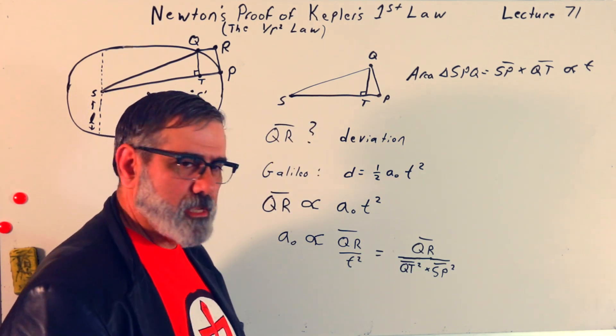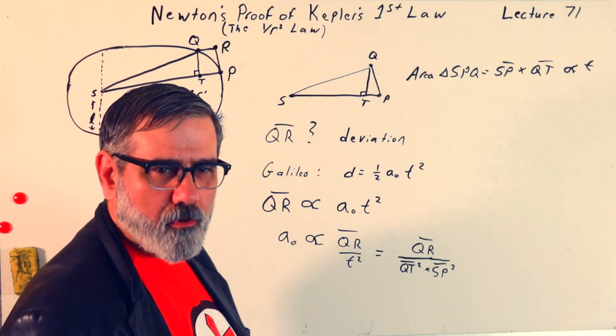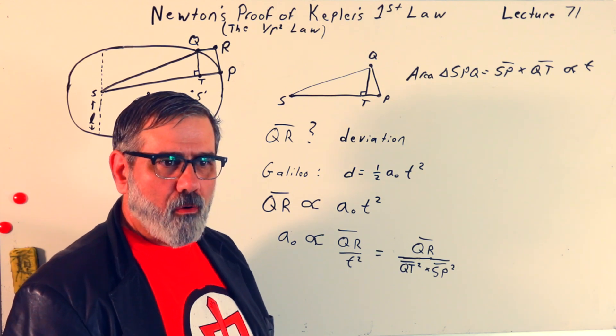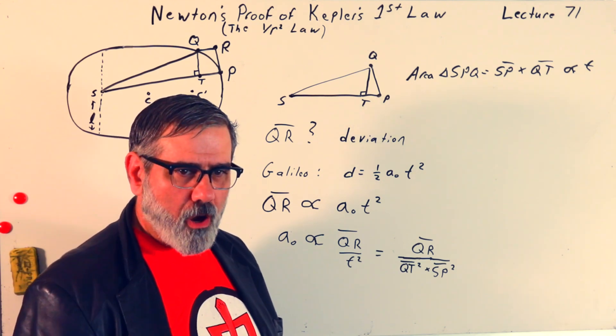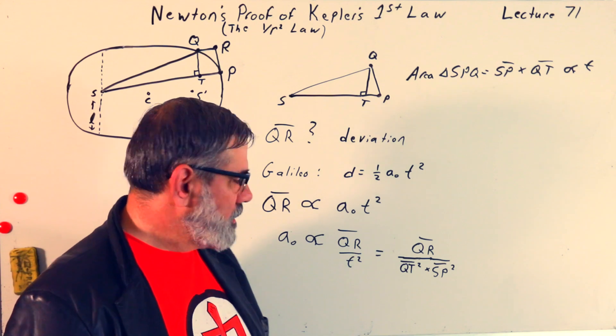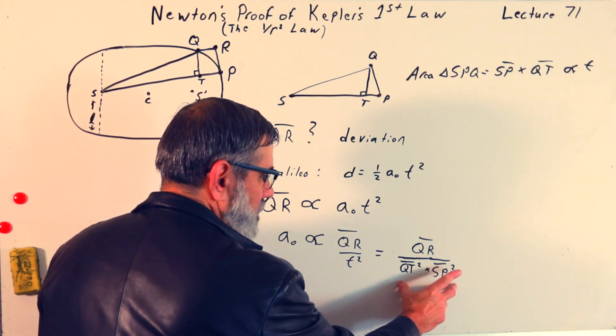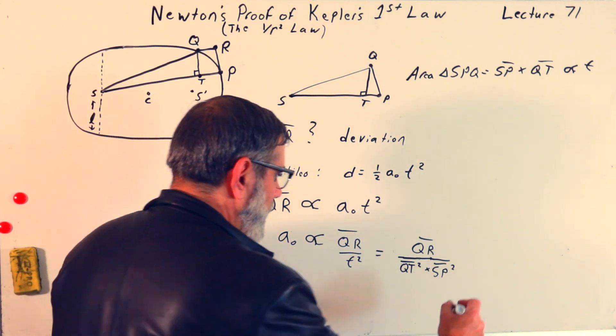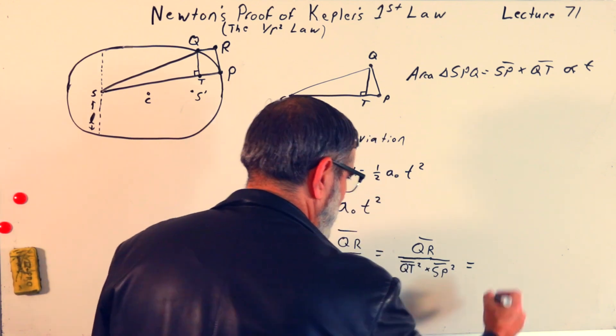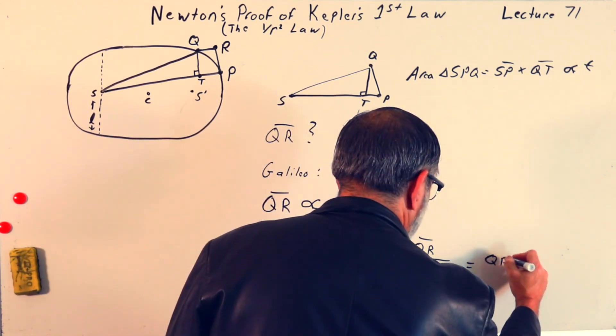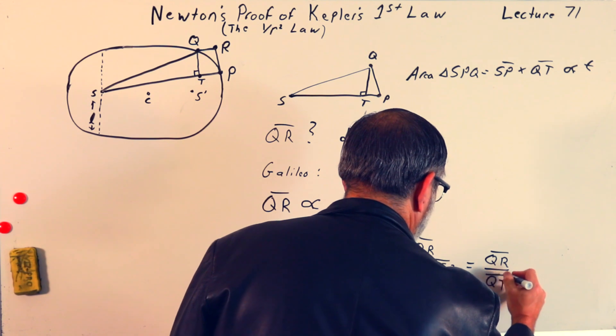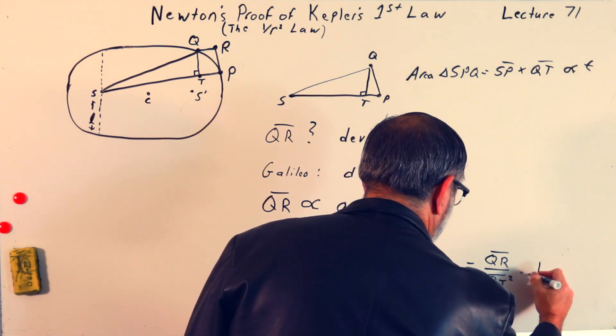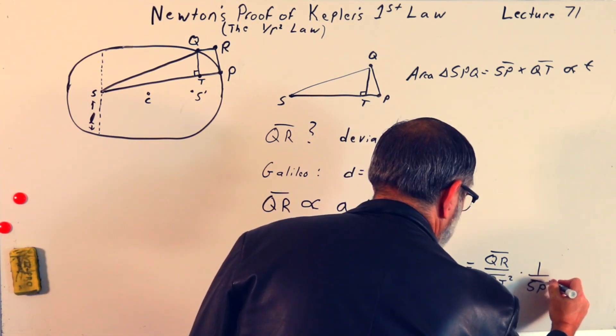So, I can rewrite this as QR over QT squared times SP squared. All I've done is I've replaced T squared and taken T from Kepler's Second Law or Newton's Theorem 1 and plugged that in here. And so, the whole point of Theorem 3 is it says, okay, when we're approaching a force problem, we're trying to figure out how the force works. It causes a certain orbit.